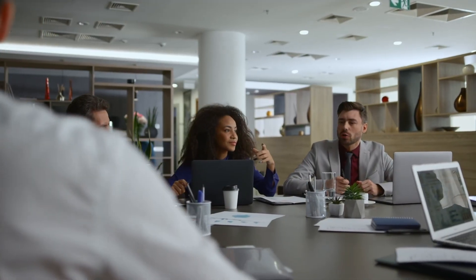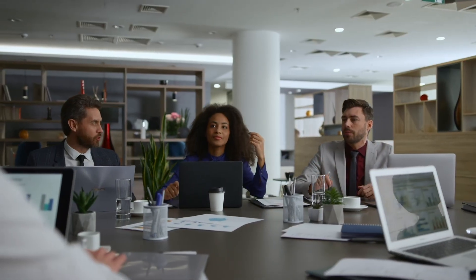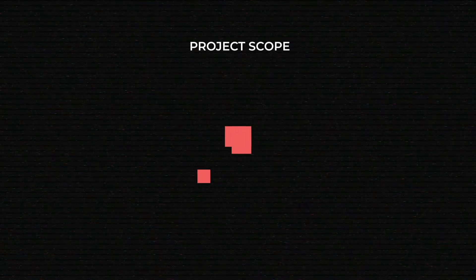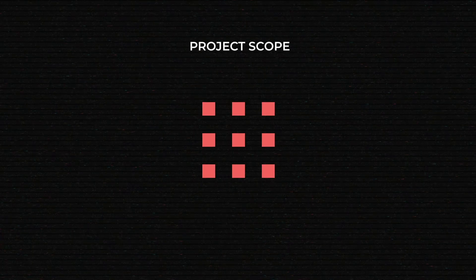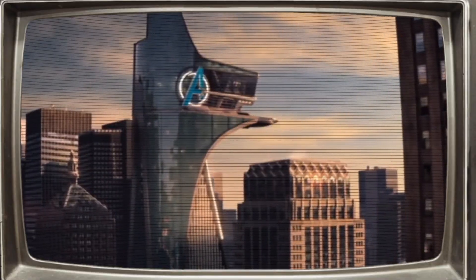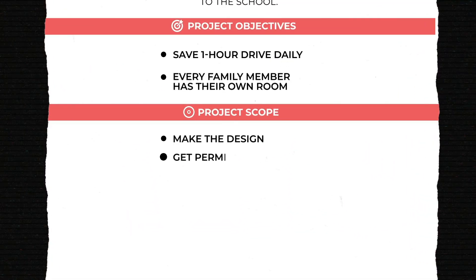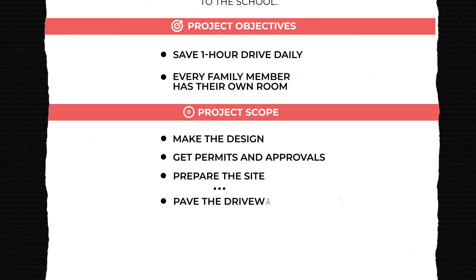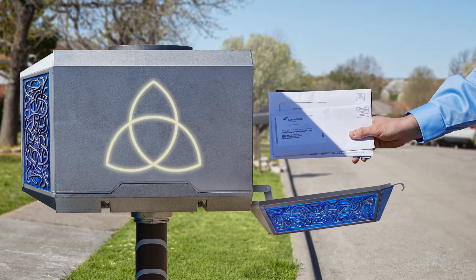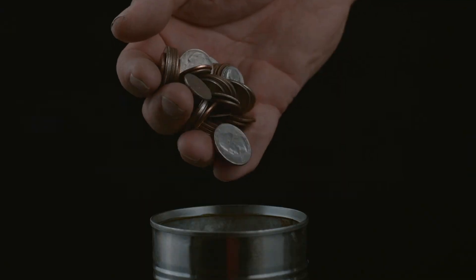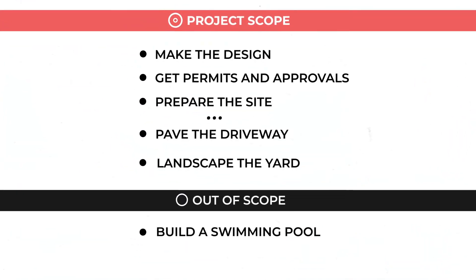Now that you've explained the whys, it's time to talk about the whats. Project Scope is the section where you list the pieces of work that must be done during the project, and the ones that must not. Break the entire undertaking into smaller blocks and define the main deliverables in each of them. As we plan our house, the Project Scope can include tasks starting from 'make the design,' 'get permits and approvals,' and 'prepare the site,' all the way up to 'pave the driveway and landscape the yard.' You might also want a pool, but if it doesn't fit in your budget right now, you can add it to the out-of-scope part.